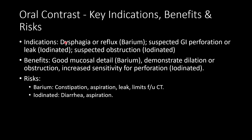Reviewing indications for oral contrast: barium is often used in the setting of dysphagia, suspected aspiration, reflux, or gastritis. In suspected GI perforation or leak, or suspected obstruction or stricture, we use iodinated contrast. Barium gives good mucosal detail. Both forms of contrast can demonstrate dilation, stricture, or obstruction of the bowel. With iodinated contrast in a suspected leak or perforation, we have much higher sensitivity for detecting the perforation and its location when oral contrast is present versus absent.